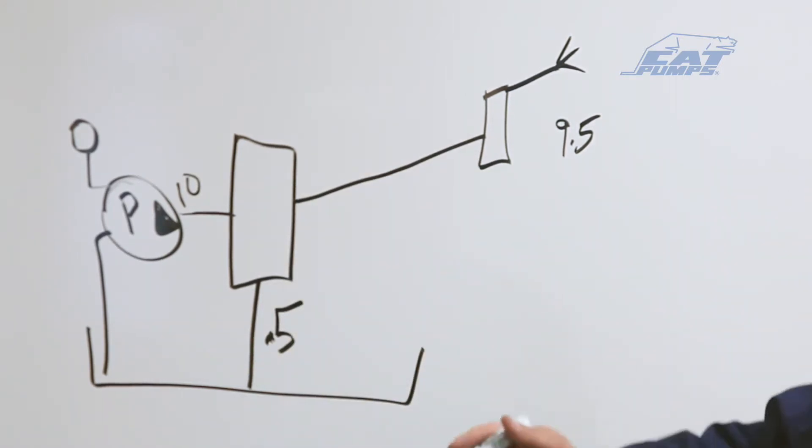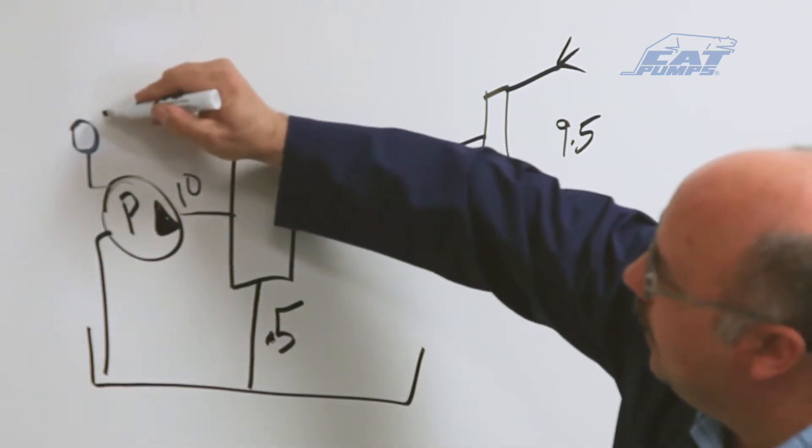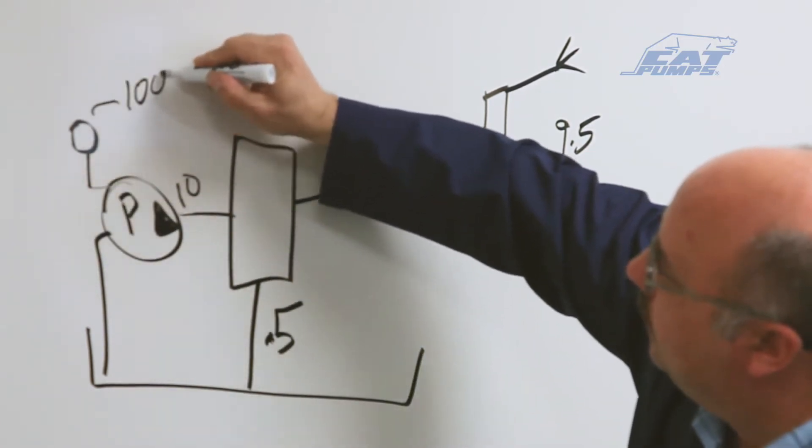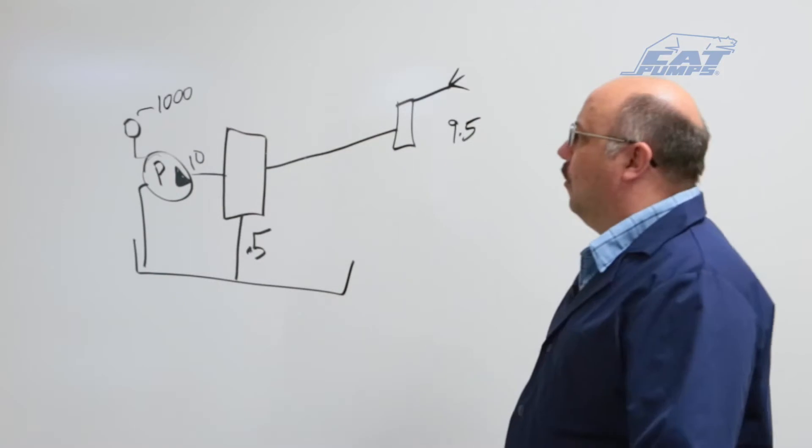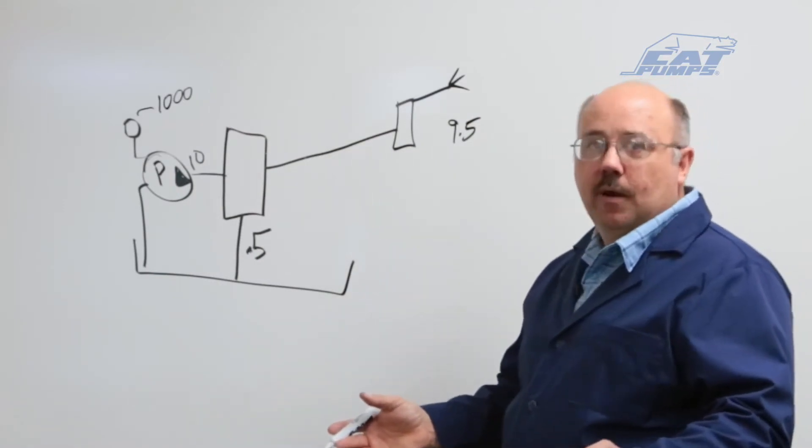When this system is running, you'll build a discharge pressure. In this case, we're going to use 1000 psi for the pressure. And as the system is running, everything is working well.